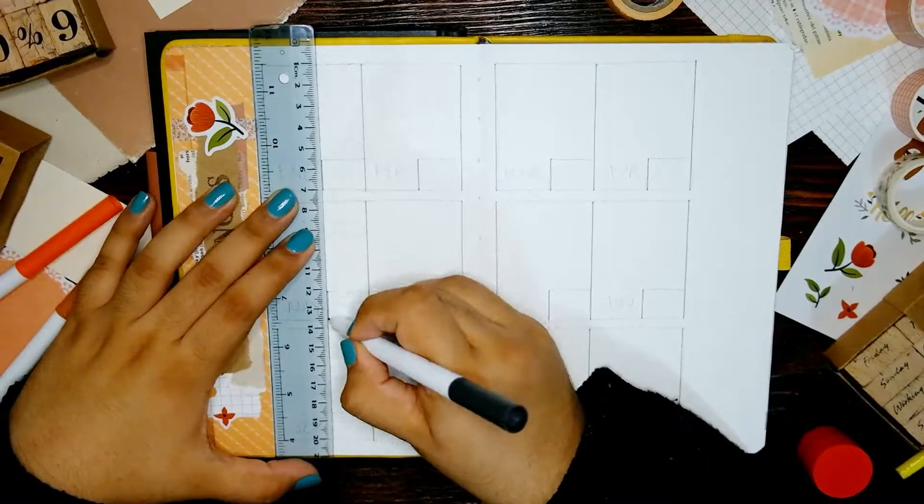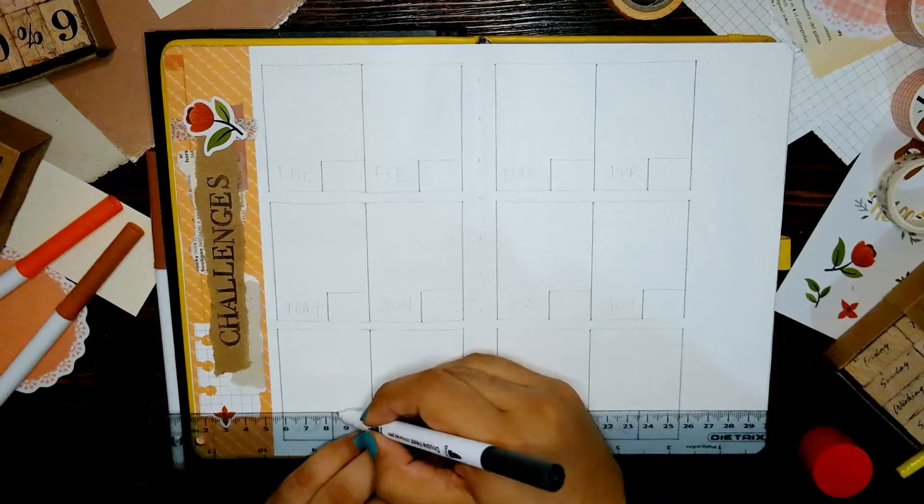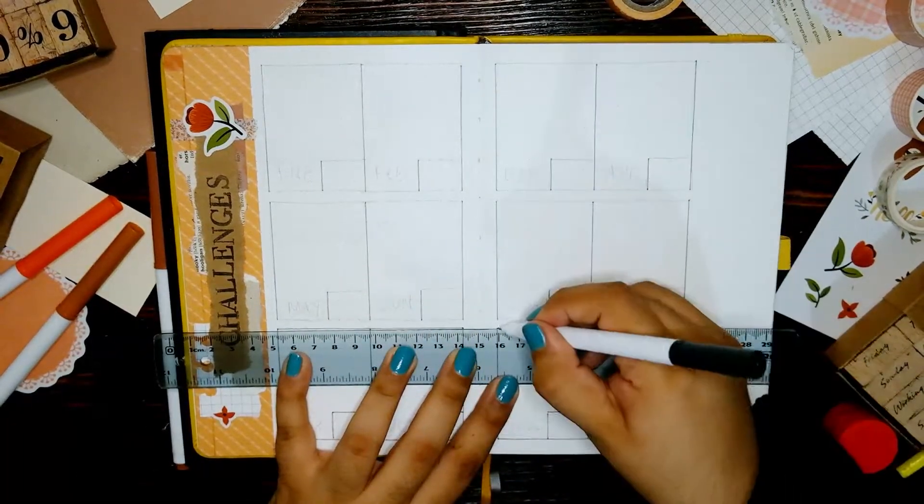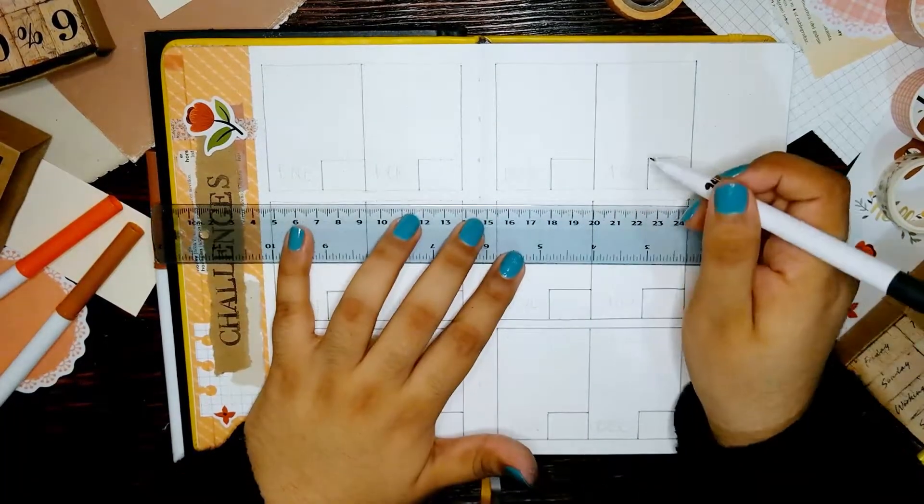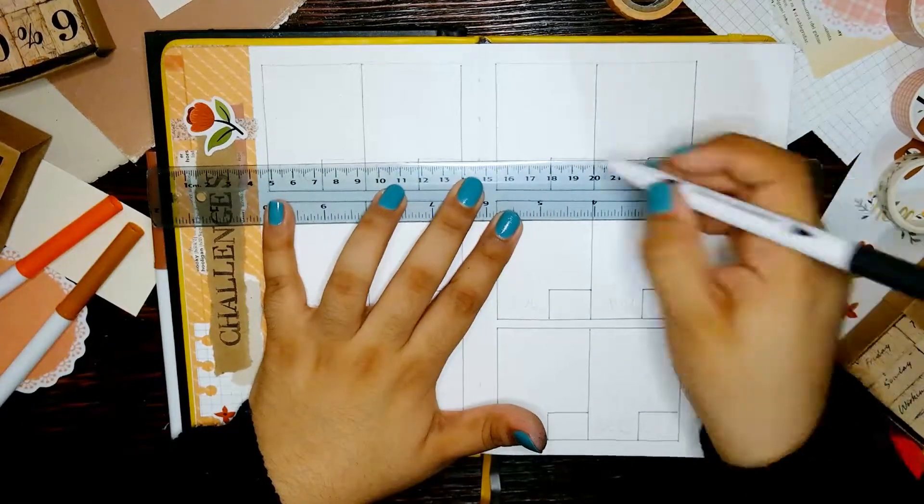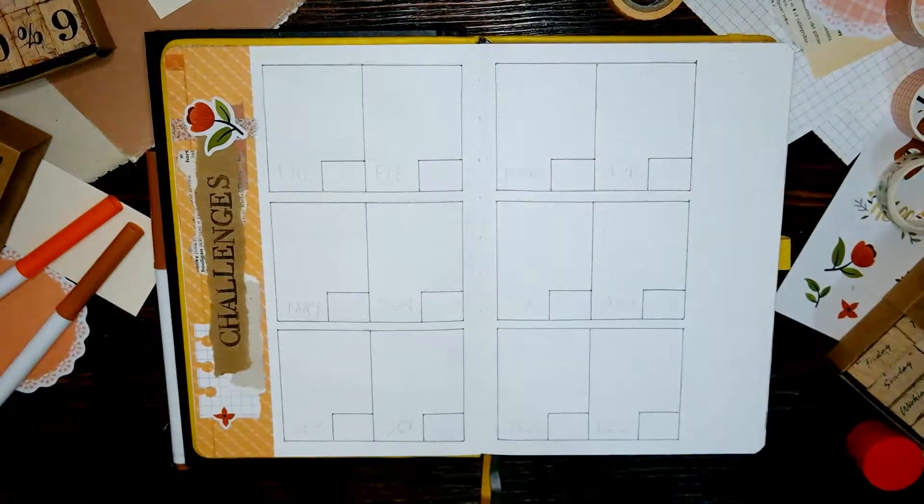The layout is not much different from what I did before, the only difference is that this time I put a small box in the bottom right corner of each monthly section. This space will serve to mark if I completed or not a challenge or maybe put something like I have completed the challenge so I won't feel too bad if I didn't quite make it.